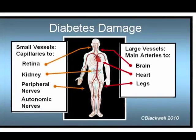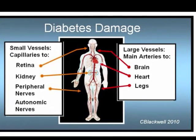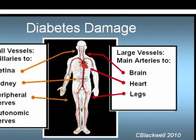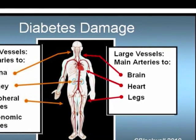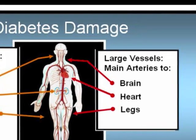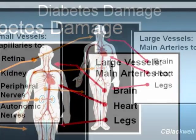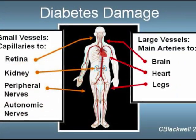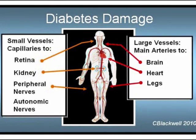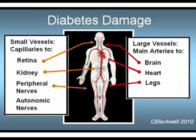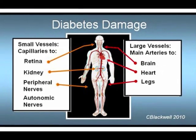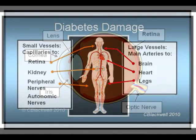Diabetes also causes atherosclerosis, thereby damaging and narrowing large blood vessels. That causes a significant increase in stroke, heart attack, and peripheral vascular disease. The general concepts of damage in diabetes are covered in more detail in the video segment on diabetes. Now, let us concentrate on the eye.